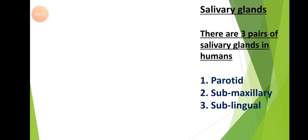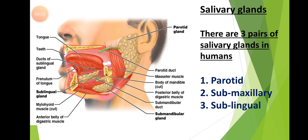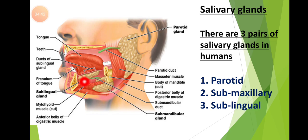Let us discuss the salivary glands. There are three pairs of salivary glands in humans: the parotid glands, submaxillary glands, and sublingual glands. The submaxillary glands are also called submandibular glands. In such a way, there are three pairs of salivary glands in humans.